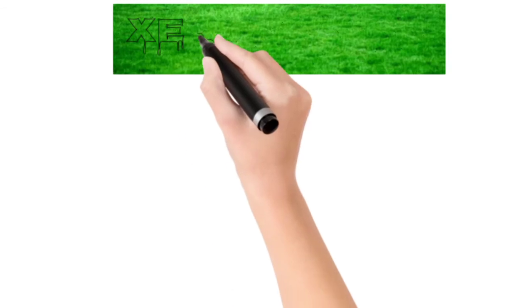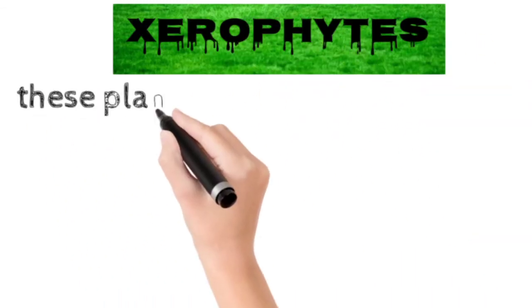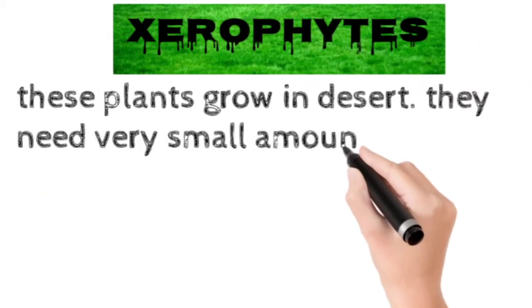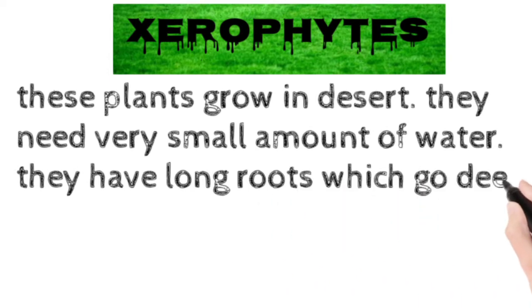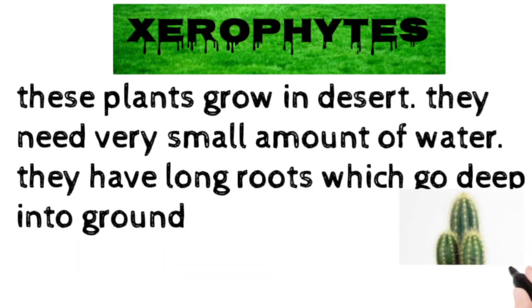Number 2: Xerophytes. These plants grow in deserts. They need a very small amount of water. They have long roots which grow deep into the ground. Cactus is their example.